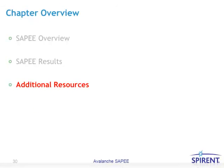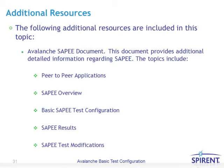Additional resources are included in this topic. The Avalanche SAPI document provides additional detailed information regarding SAPI, covering topics such as peer-to-peer applications, SAPI overview, basic SAPI test configuration, SAPI results, and SAPI test modifications. This document contains more detailed information than covered here — for example, within the basic SAPI test configuration section, it will walk through an entire test configuration.